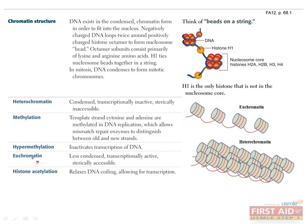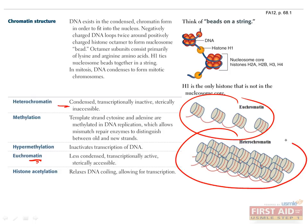In general, adding acetyl groups or removing methyl groups decreases the affinity of DNA for histones, which allows it to be more accessible to RNA polymerase and other transcriptional machinery. This is known as euchromatin, which you can see here. In the opposite situation, having more methylation or less acetylation results in tighter binding of DNA to histones, so it can't be transcribed, and this is known as heterochromatin, which is shown here.